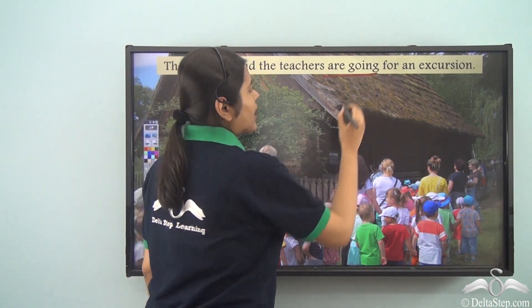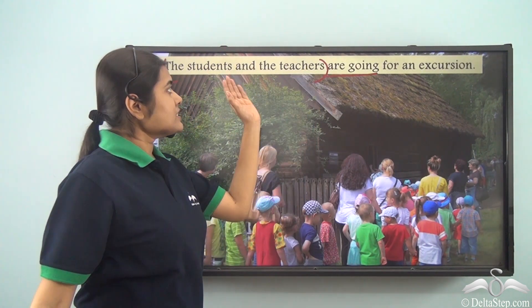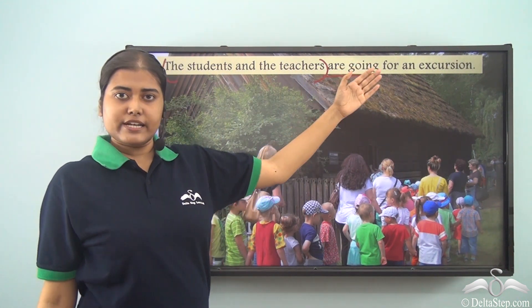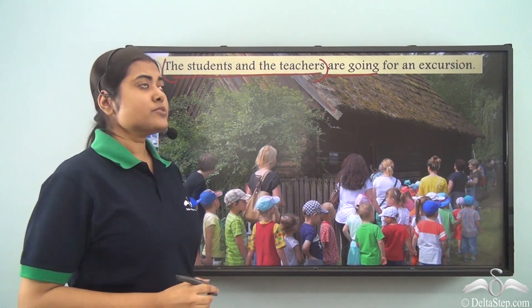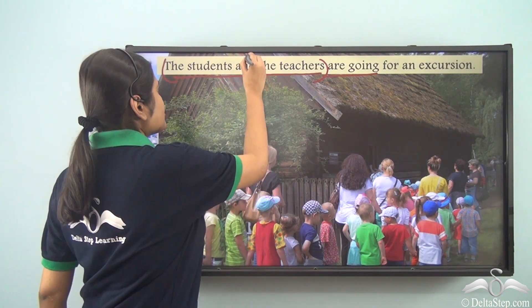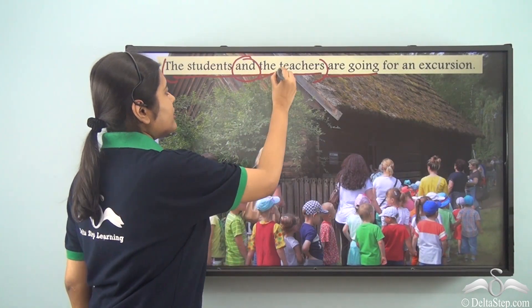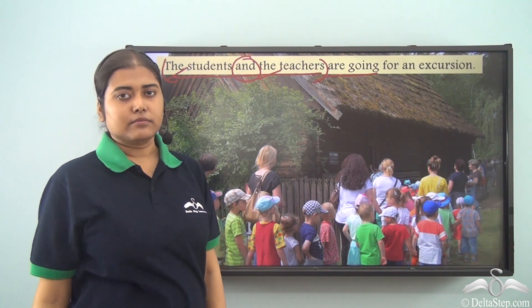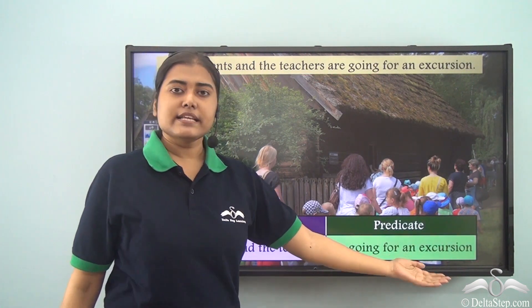Consider: 'The students and the teachers are going for an excursion.' The verb is 'are going.' If we ask who are going for an excursion, the answer is 'the students and the teachers.' It is not just the teachers, nor just the students — both together. So 'the students and the teachers' forms a compound subject, because we have two nouns joined by the conjunction 'and,' both performing the action 'are going.' The predicate is 'are going for an excursion.'